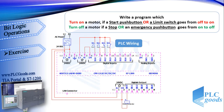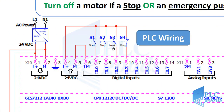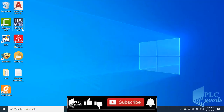Now let's do a simple project. I want to write a program which turns on a motor if a start pushbutton or a limit switch goes from off to on, and turns off the motor if a stop or emergency pushbutton goes from on to off. S1 and S3 are normally open pushbuttons, where S3 is activated by a level sensor. S2 and S4 are used to stop the output, where S4 is a normally closed pushbutton.